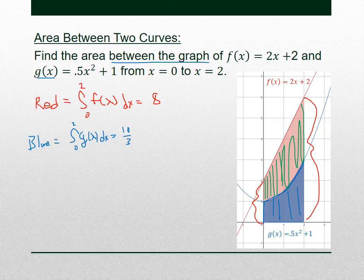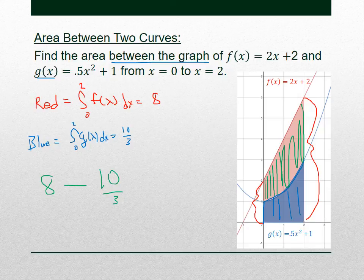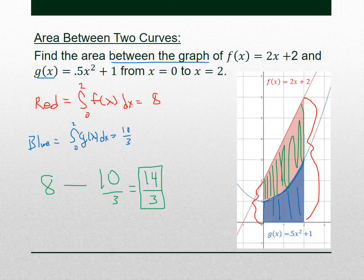If we do the area under f(x) and then subtract the area under g(x), that gives us the area between those two graphs. The red area was 8 and the blue area was 10/3, so 8 − 10/3 = 14/3. So 14/3 is the area shaded in green between the two graphs.